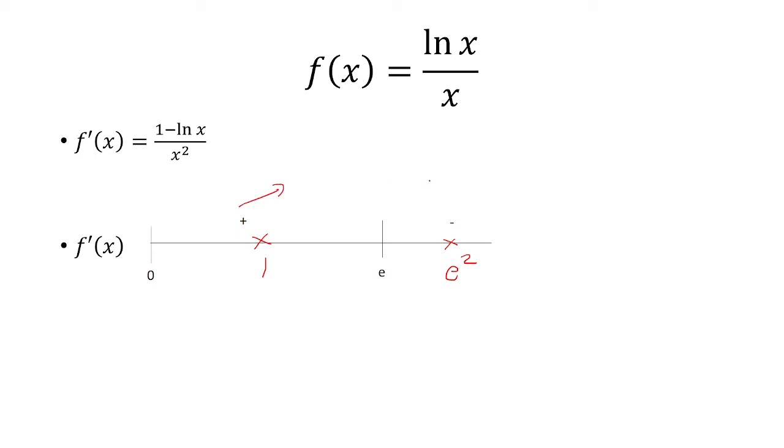So here, f is increasing and then decreasing, so you expect there to be a maximum at x equals e. But the question is, is this an absolute maximum?